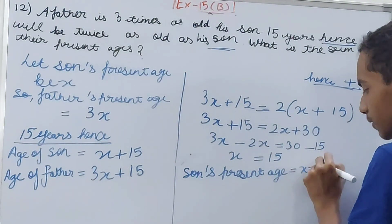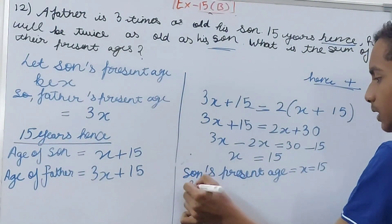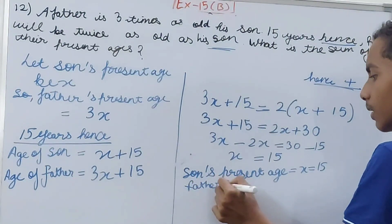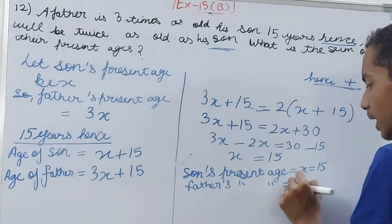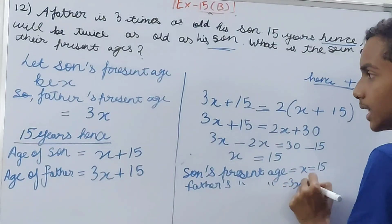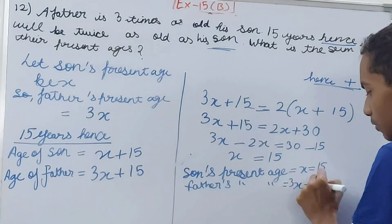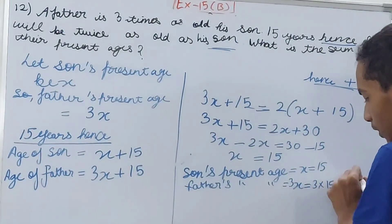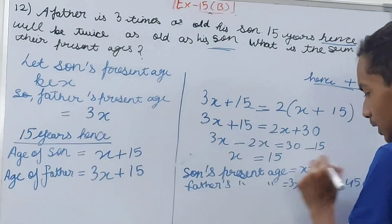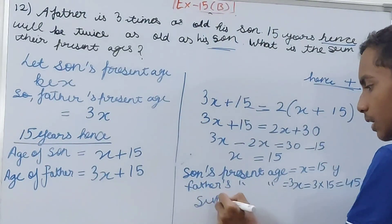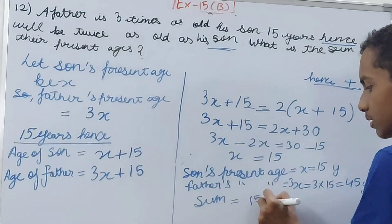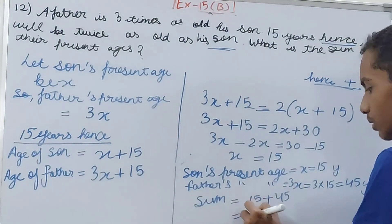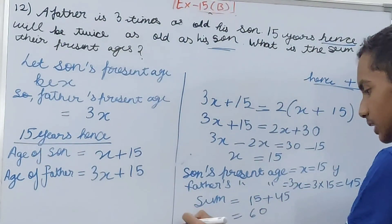Son's present age is x = 15, and father's present age is 3x, so 3 × 15 = 45 years. The sum will become 15 + 45 = 60, and this is your answer.